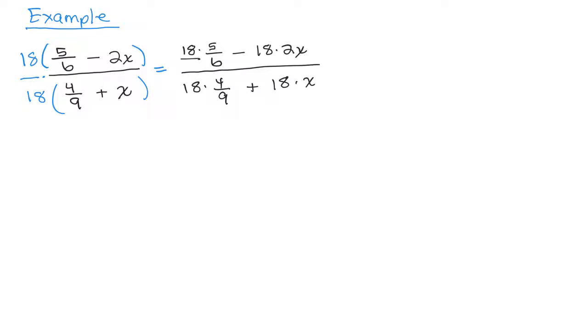So if you want, you can write 18 over 1, that's up to you or you could just leave it as a whole number. And then since we multiply by the least common multiple of these fractions, 5 sixths and 4 ninths, you'll definitely be able to cancel. So 6 goes into 18, 3 and 9 goes into 18 twice.